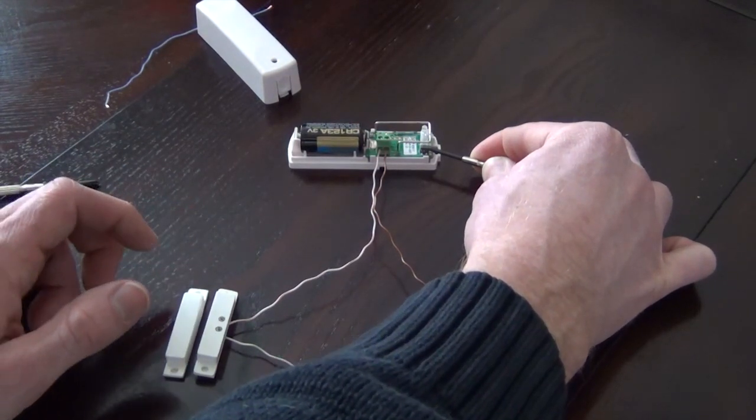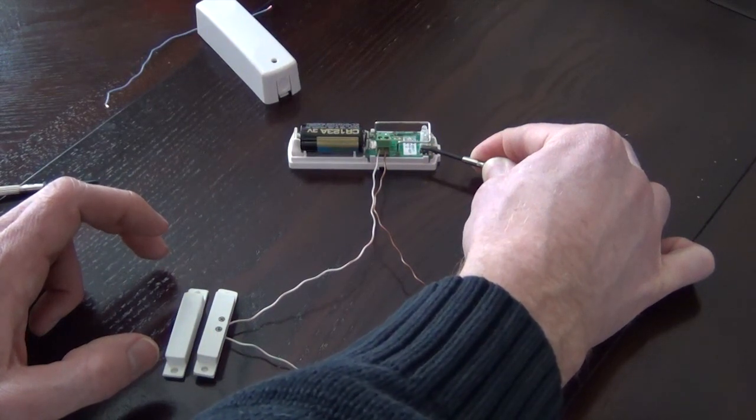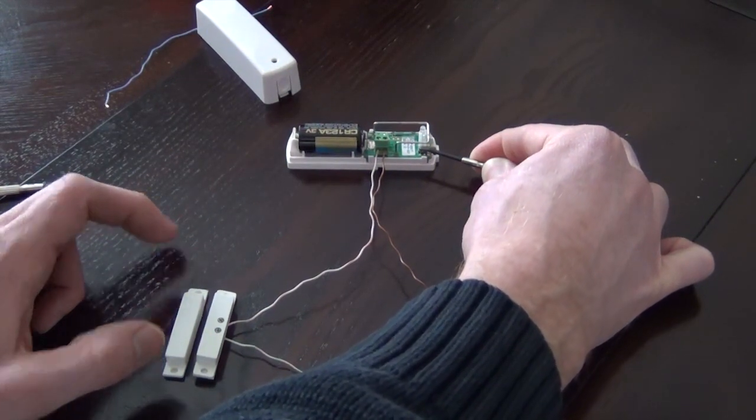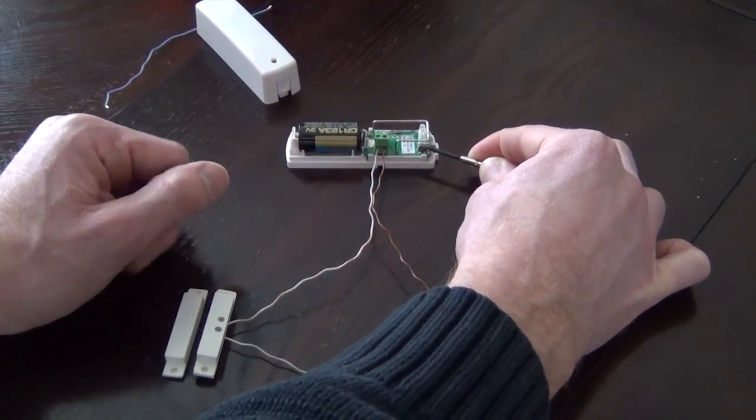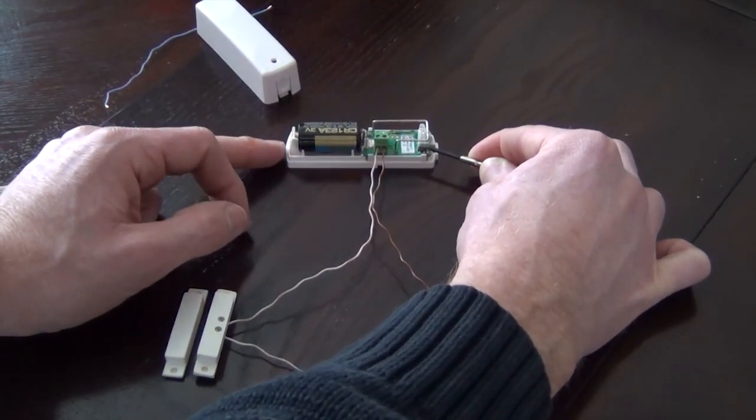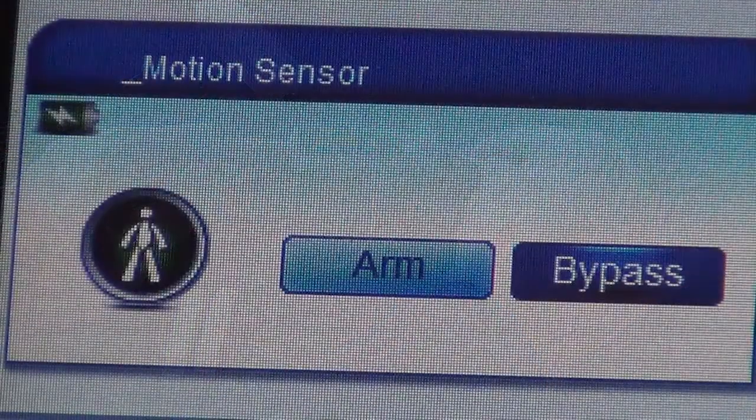In the Vera3 or the VeraLite, you can see that status changing in the website. I will show you that in just a second. It's that easy. You can use one of these Schlage sensors to wire up a whole room, as long as you can get the wires connected.